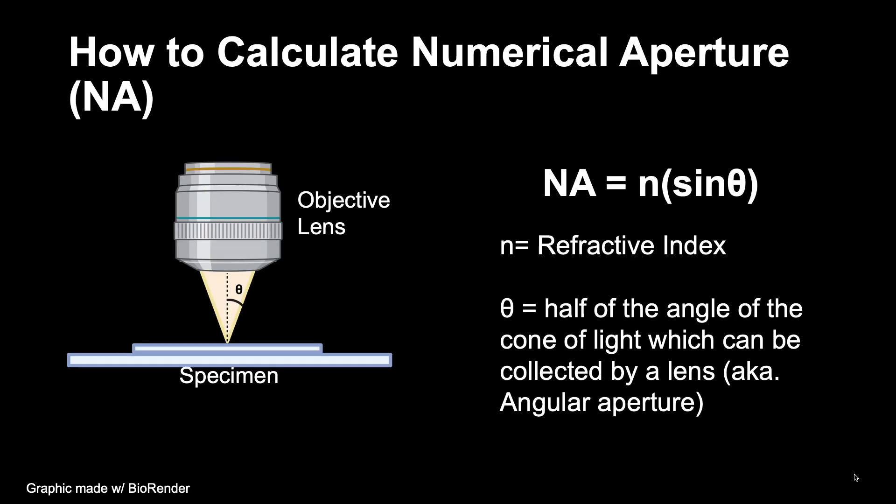Numerical aperture, often written as NA, can be calculated by multiplying the refractive index, or n, of the medium between the lens and coverslip by the sine of theta. And theta represents the angular aperture, or half the angle of the cone of light that the lens can collect. You will notice in the equation that there is a positive correlation between the numerical aperture and refractive index.